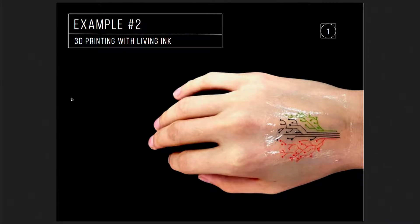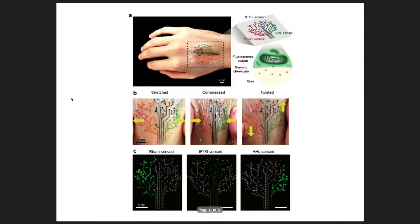The second example: we can also print those cells in a living ink. Our collaborators came up with a way to use the engineered cells we provided and print them on top of your skin, so you can have a living tattoo kind of thing. They can tell you whether certain chemicals are present on your skin.